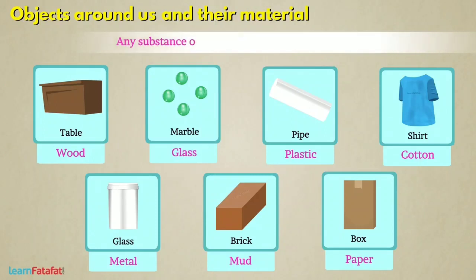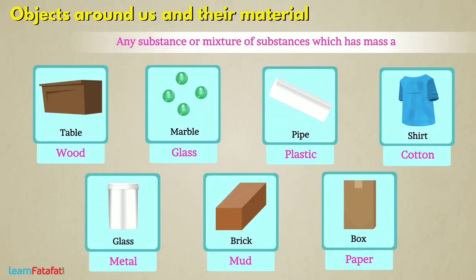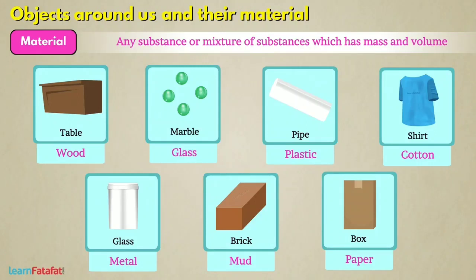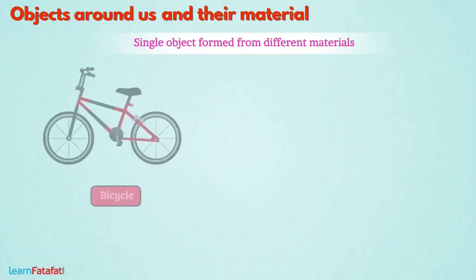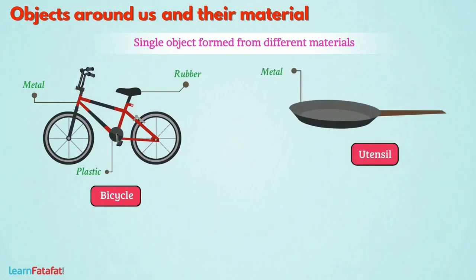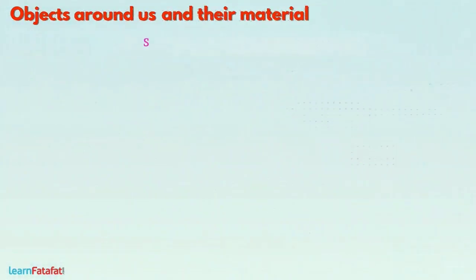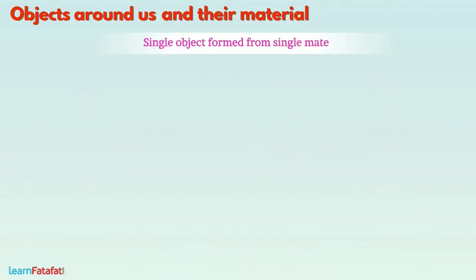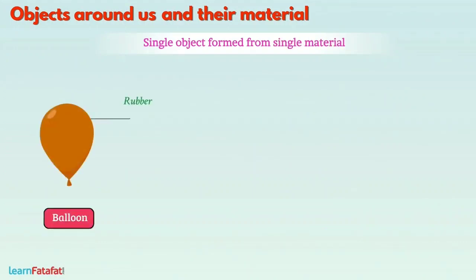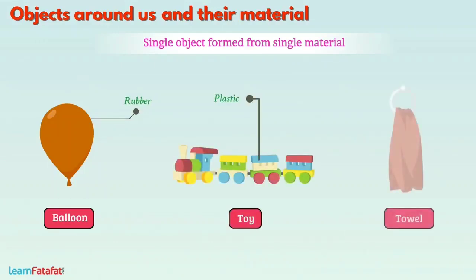In general, any substance or mixture of substances which has mass and volume is called a material. When classifying objects, we consider that a single object is usually formed from different materials. For example, a bicycle is made of metal, rubber, and plastic. A utensil is made of metal with a handle of wood or plastic. A spectacle is made of plastic and glass. However, a single object can also be formed from a single material — a balloon is made of rubber, a toy of plastic, a towel of cotton.